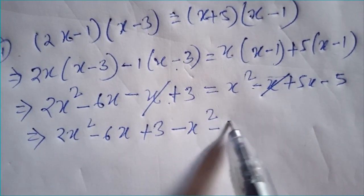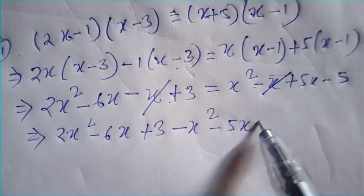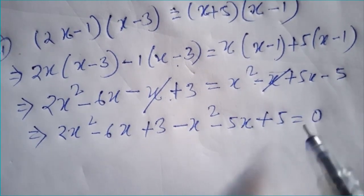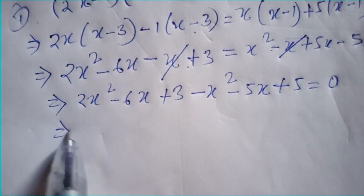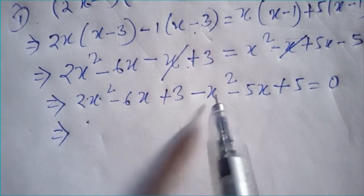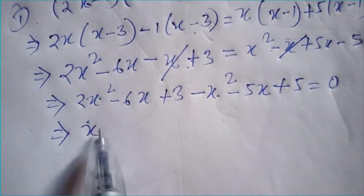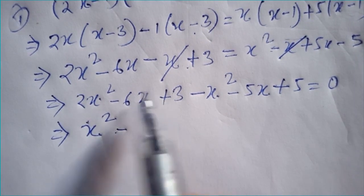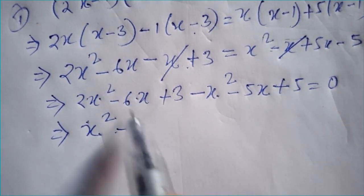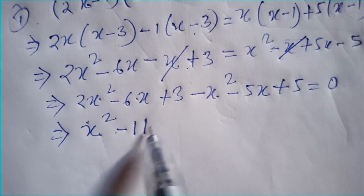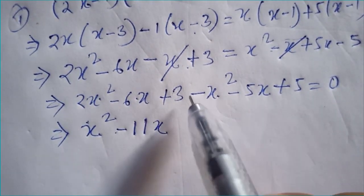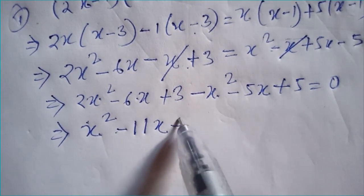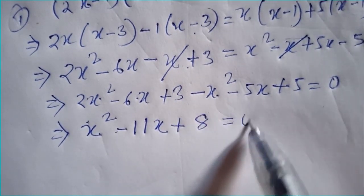Simplifying further, 2x squared minus 6x plus 3 equals x squared plus 4x minus 5. Moving everything to one side: 2x squared minus x squared minus 6x minus 4x plus 3 minus negative 5. This gives us x squared minus 11x plus 8 equals 0.